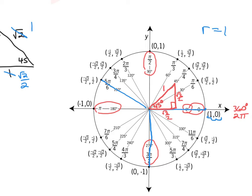Where the unit circle comes into play is if you memorize the ordered pair associated with the 45-degree angle. This is going to be your x value, which is one of the legs, and this is your y — because this is x, this is y.